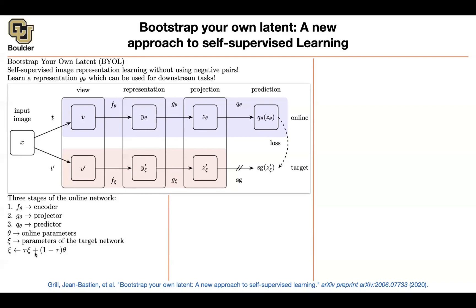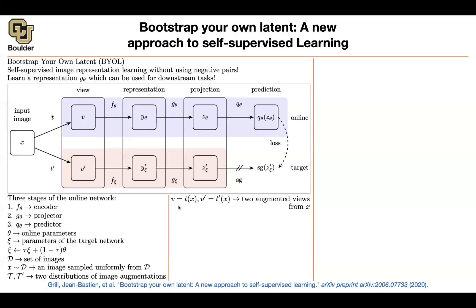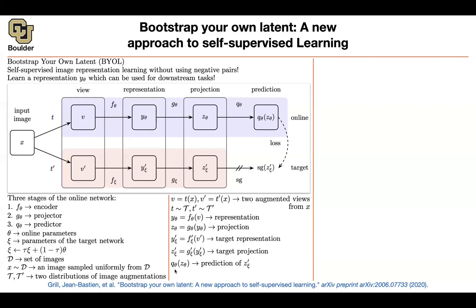You have a dataset of images with no labels. You sample an image and apply two different transformations to get two different views using data augmentation. You push a view through your neural network to get the representation, then project it to get your z vectors. You do the same with the target network to get target z values, which you want to predict. The predictor q takes zθ as input and predicts the latent — you can think of it as an encoder-decoder architecture operating in latent space rather than image space.